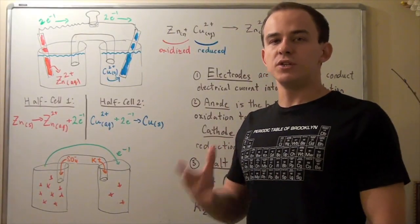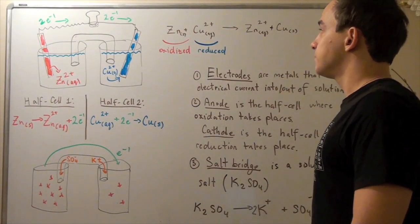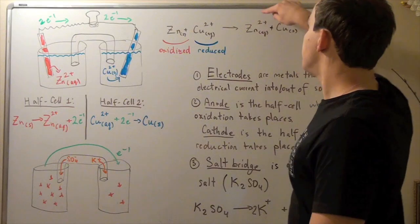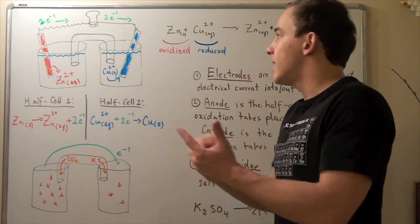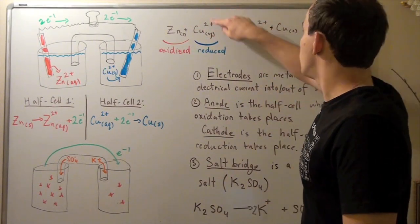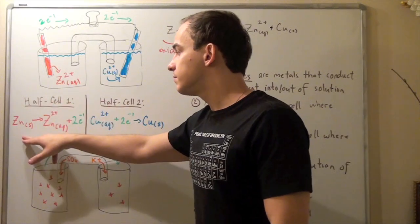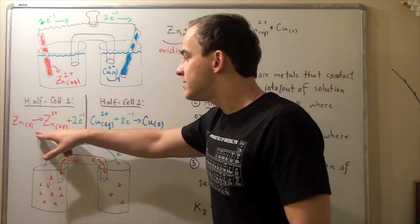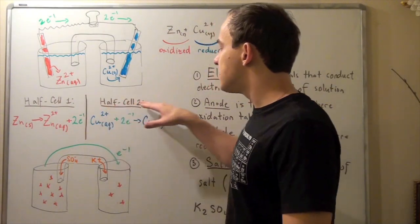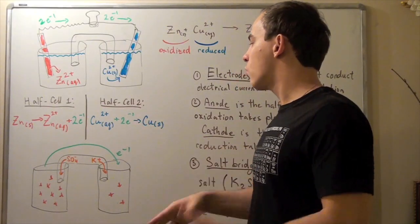Let's examine the following redox reaction. Zinc solid reacts with aqueous copper to form aqueous zinc and solid copper. Notice that our zinc solid is oxidized — it loses two electrons to form a plus two ion, while those two same electrons are taken up by our copper molecule in the aqueous state, and so copper is reduced from a plus two to a neutral atom. Oxidation of zinc occurs in half cell number one, and zinc solid becomes zinc in the aqueous state with a plus two charge, releasing two electrons. While in half cell number two, reduction occurs, and aqueous copper takes up two electrons to form solid copper.